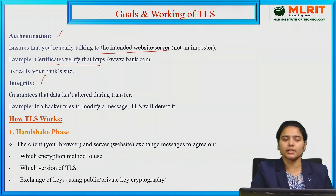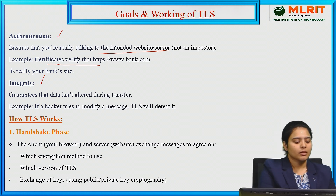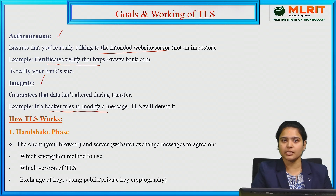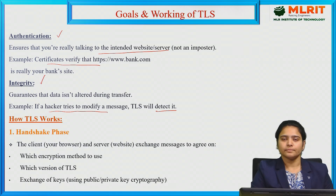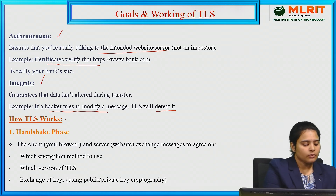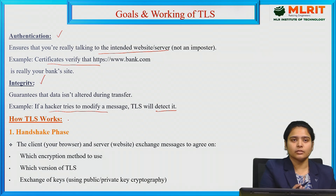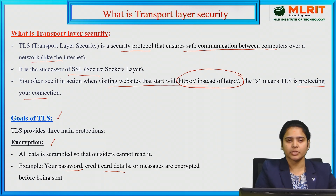The third goal is integrity. Integrity means the data should not be altered or modified. For example, if hackers try to modify messages, TLS will detect that. So the three main goals of TLS are encryption, authentication, and integrity.